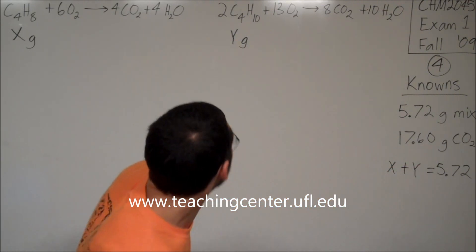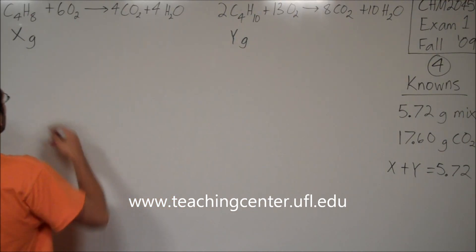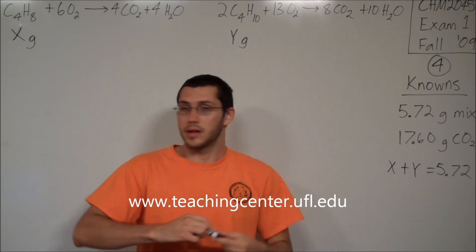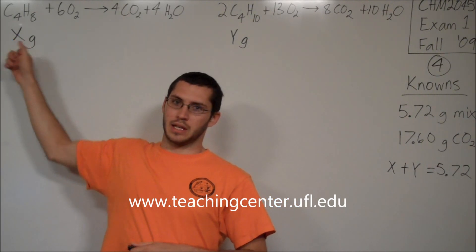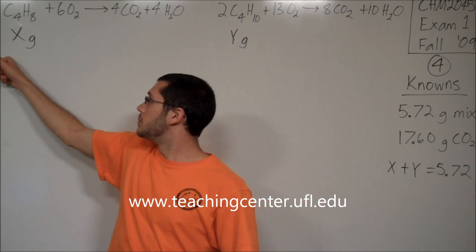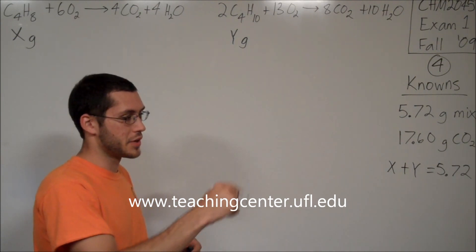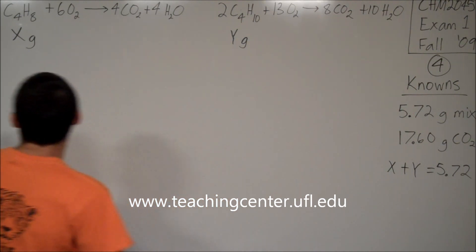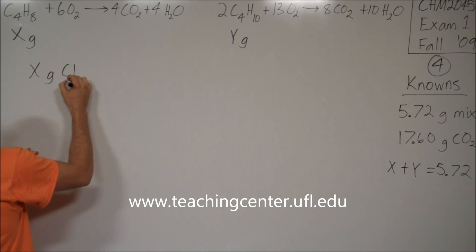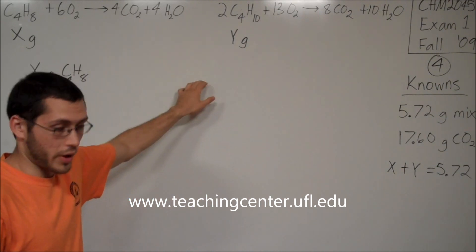So how do I figure out how much CO2 the x grams of butene made? It might seem confusing to work with a variable. If it is confusing, pretend x is just some number — give it a random value like 4 grams — just tell yourself it's wrong. Otherwise, you can work in variables, and I'm going to show you how. So let's start out with x grams of butene, C4H8, and convert all this x grams to grams of CO2.